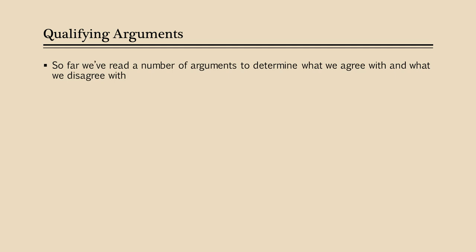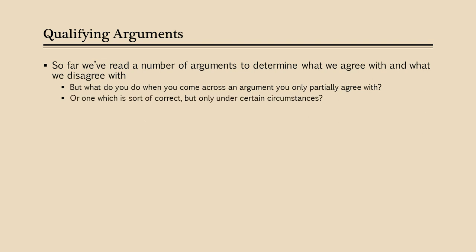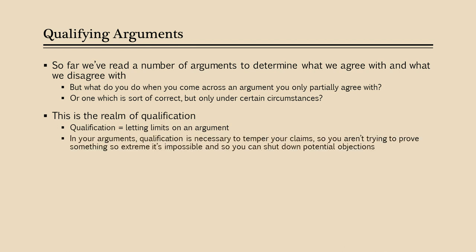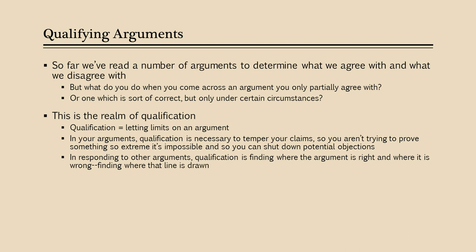Let's talk about what qualifying arguments actually is. So far, we've read a number of arguments to determine what we agree with and what we disagree with. But what do you do when you come across an argument that you only partially agree with, or one which is sort of correct but only under certain circumstances? This is the realm of qualification. Qualification is simply setting the limits of an argument. In your arguments, qualification is necessary to temper your claims so that you aren't trying to prove something so extreme it's impossible, and so you can shut down potential objections by narrowing in what you're really trying to argue. When you're responding to other arguments, qualification is finding where that argument is right and where it is wrong — finding where that line can be drawn.